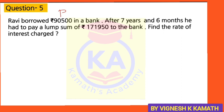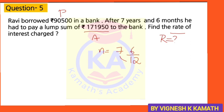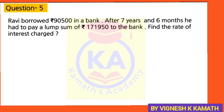He had to pay a lump sum of Rs. 1,71,950 — that is A. Now we have to find the rate of interest, that is R. You should find N: N is 7 years and 6 months. As shown in Part 1, we solve: 7 into 12 plus 6, divided by 12, equals 7.5 years. So P is 90,500, A is 1,71,950, N is 7.5 years, and we need to find I or R — just write I for now.